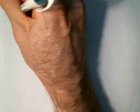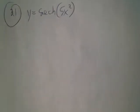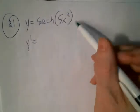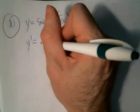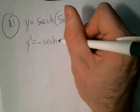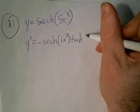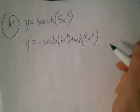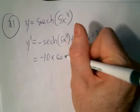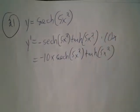When taking derivatives involving hyperbolic functions, we use the chain rule — taking the derivative of the outer part and multiplying by the derivative of the inner part. For example, the derivative of hyperbolic secant is negative hyperbolic secant times hyperbolic tangent, then times the derivative of the inner part.